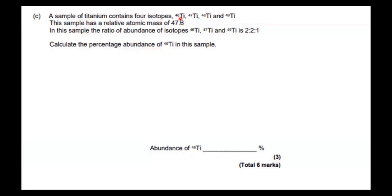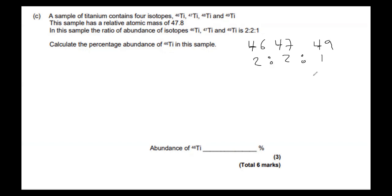Let's move on to the mega hard bit of this relative atomic mass question. A sample of titanium contains four isotopes: 46, 47, 48, and 49. The sample has an RAM of 47.8. The ratio of abundance of isotopes 46, 47, and 49 is 2 to 1. We need to calculate the percentage abundance of 46. We don't know the abundance of 48, so let's call it Y.